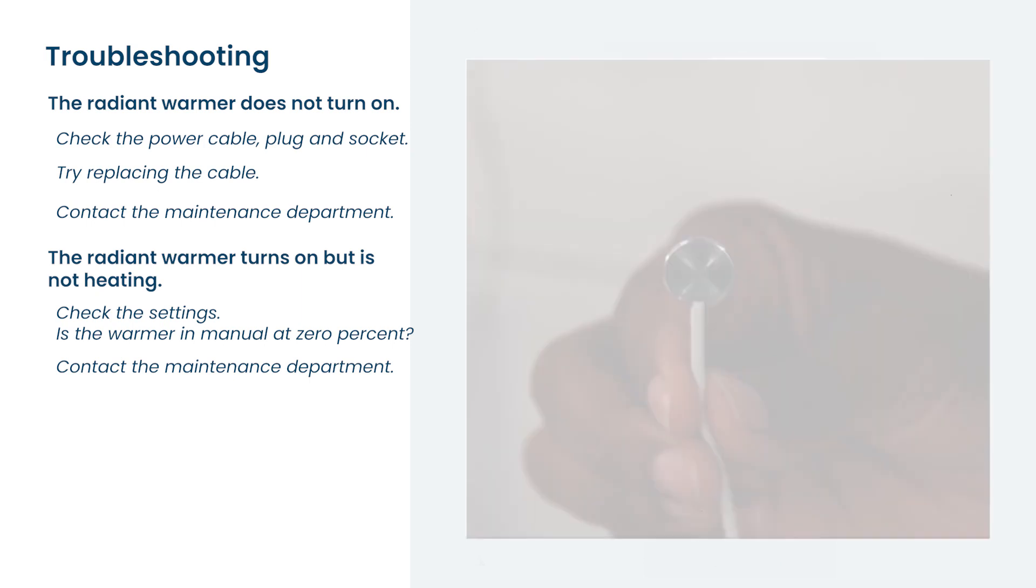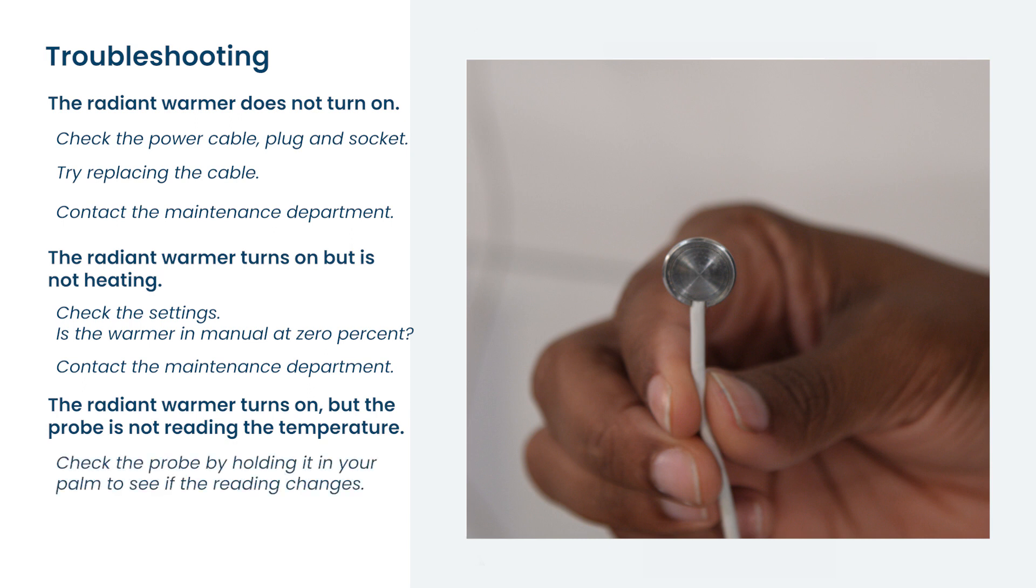The probe is the most delicate part of the machine. If it disconnects, an alarm will go off. But it may also stop working. If that happens, you can check it by holding it in the palm of your hand and seeing if the temperature reading changes. If that does not work, then try replacing the probe with a spare. If there is still no reading, then contact your maintenance department.